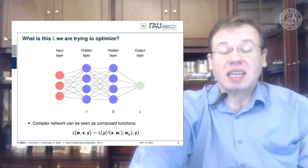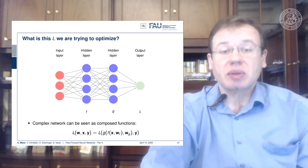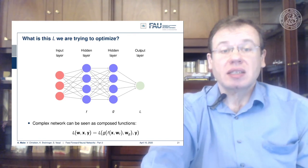There's very little theory behind the best solutions we have at the moment. What is this L that we're trying to optimize? L is computed at the very output layer.